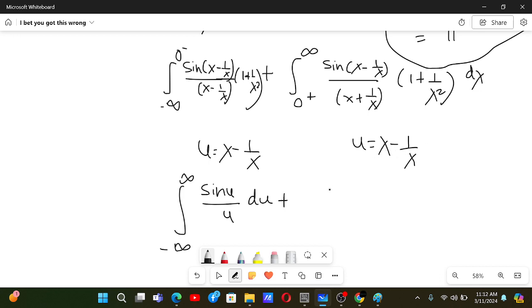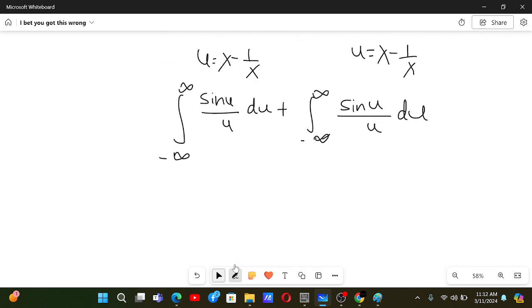Over here at 0 plus, this is 0 minus infinity, so minus infinity. And over here it's infinity, and over here it's infinity again. Sin u by u and then du. Now again that's the Dirichlet integral, and we know that this is pi, this is pi, so that's 2 pi.